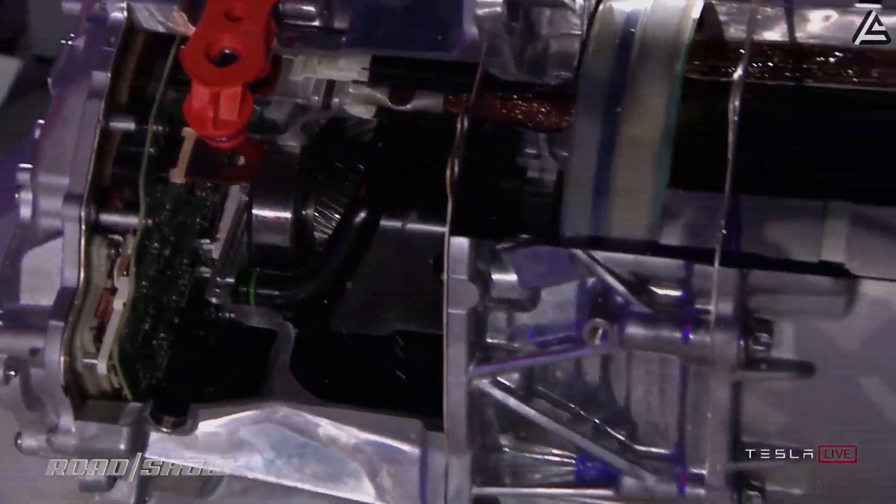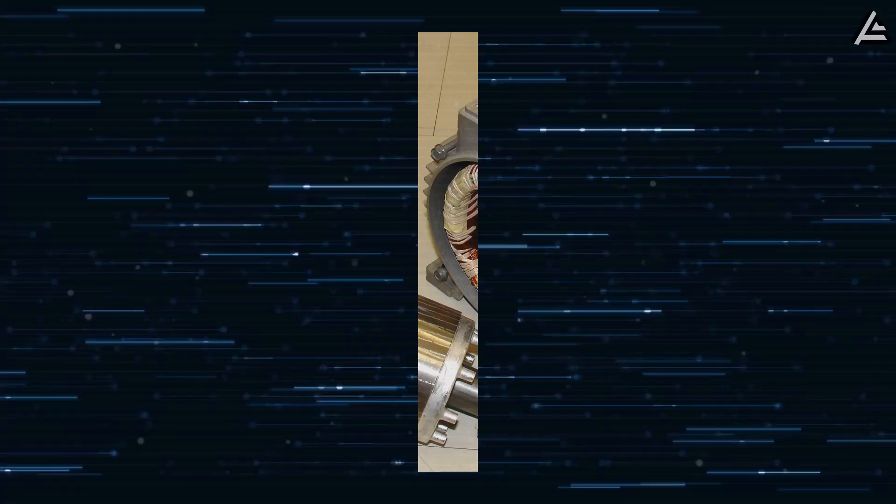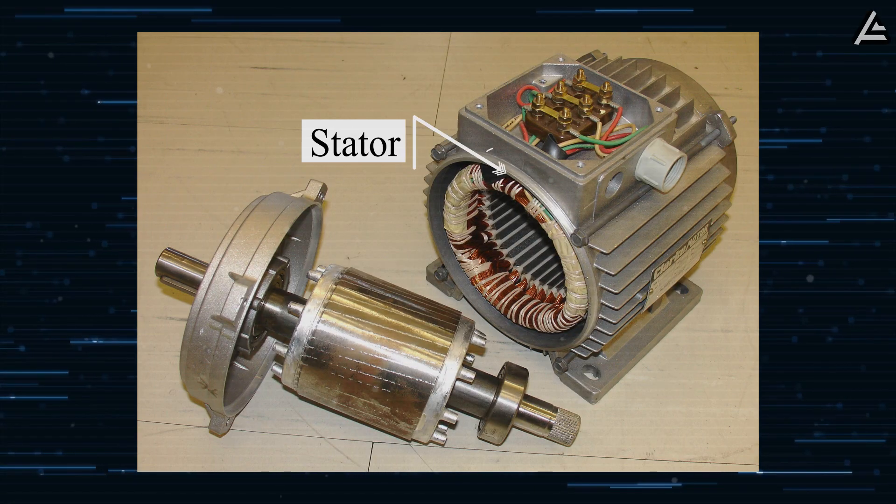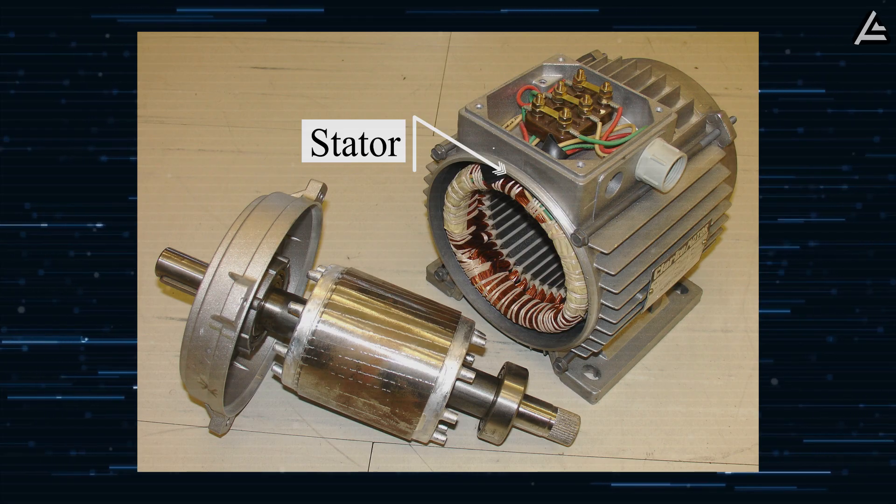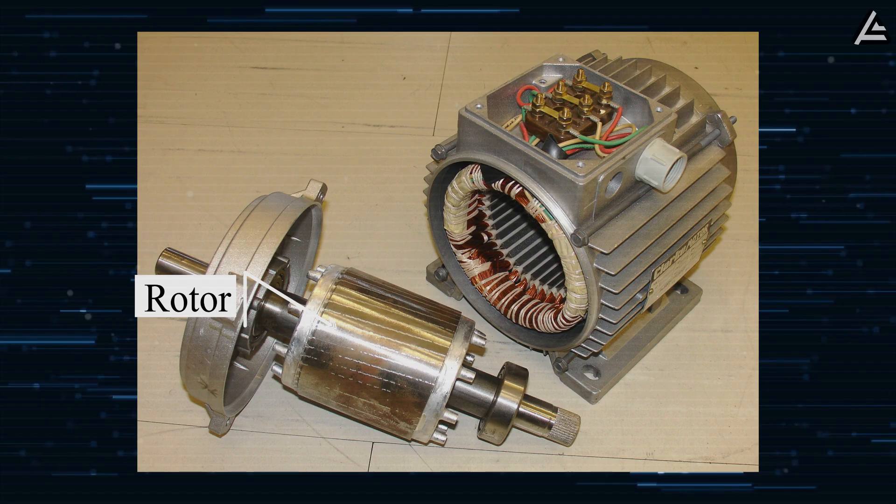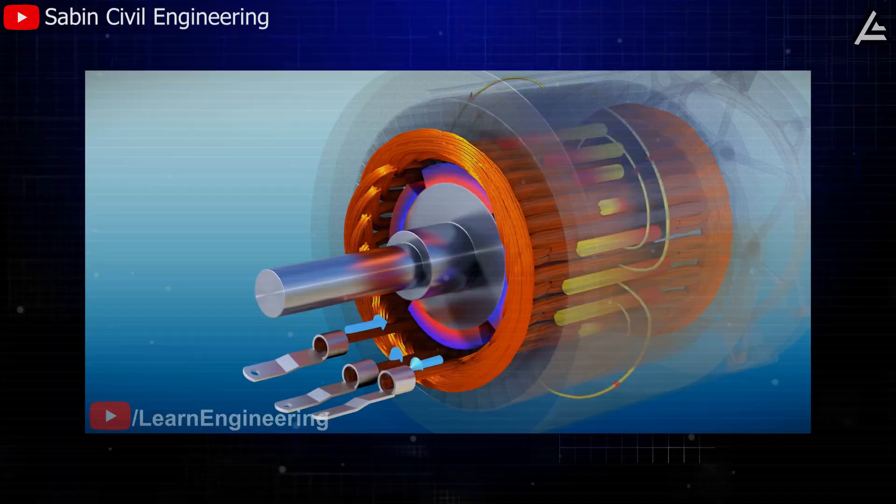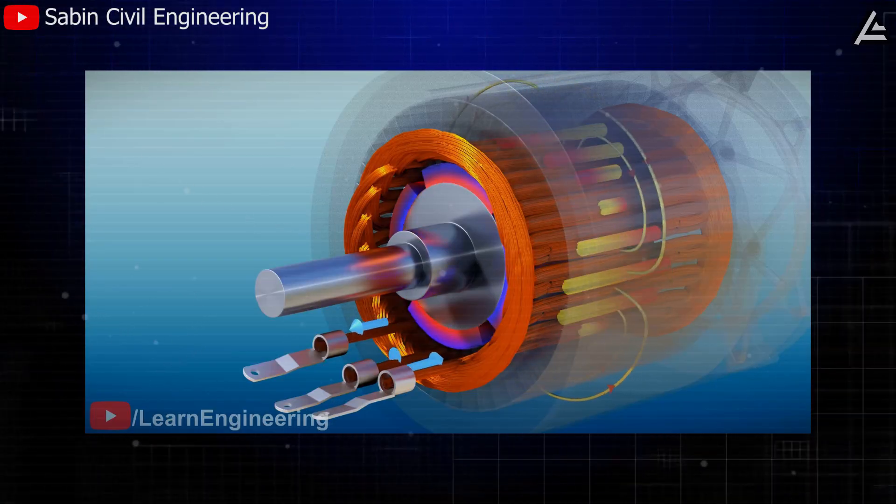To understand the leap forward, it helps to break down how a PMM works. The stator, the stationary outer ring, holds tightly wound copper coils that generate magnetic fields. The rotor, spinning inside, contains high-strength neodymium magnets that convert those magnetic forces into rotational motion. Between them is the air gap, a clearance typically measured in tenths of a millimeter—0.2 to 0.6 millimeters.